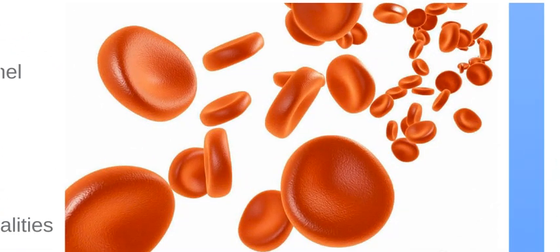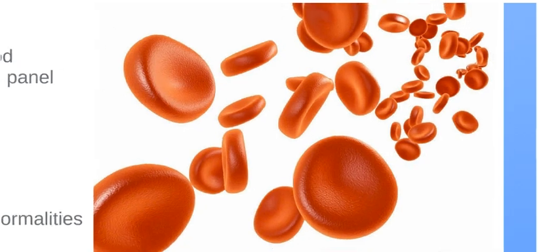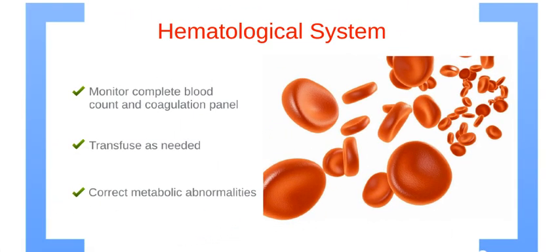The last system of post-resuscitation care is the hematological system. Monitor complete blood count and coagulation panel. Transfuse as needed to correct thrombocytopenia or replenish clotting factors, such as with fresh frozen plasma. Use calcium chloride or gluconate if massive transfusion is needed. Lastly, monitor for and correct any metabolic abnormalities that may arise post-transfusion.